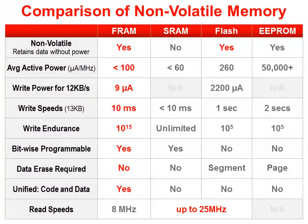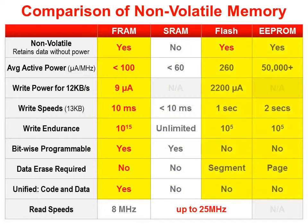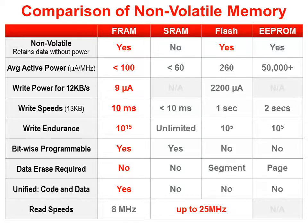Here's a comparison of four memory technologies often found on microcontrollers. While most of them use SRAM for variables and temporary storage, they also require one of the other three to provide persistent storage. Four things really make FRAM ideal. First, it uses significantly less power, especially for memory writes — the numbers shown here are for writing a 13k block of data.